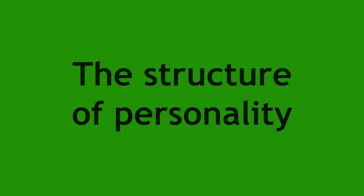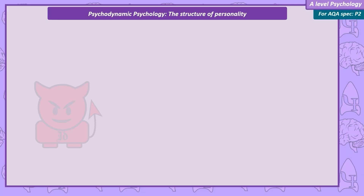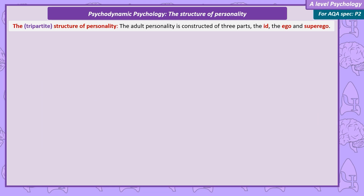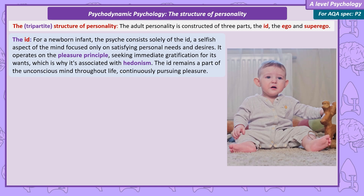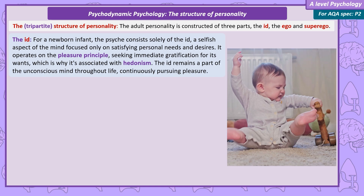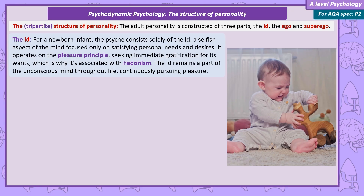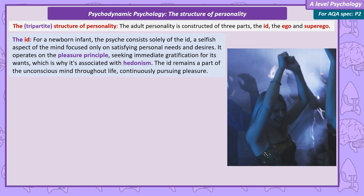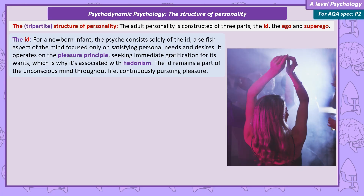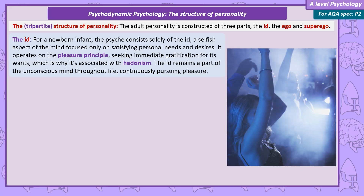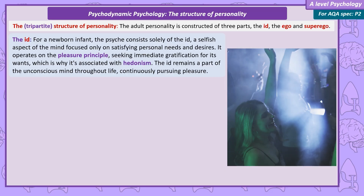The structure of personality. According to psychodynamics, the adult personality is tripartite, meaning it's constructed of three parts: the id, the ego and the superego. But for an infant, from birth to around 18 months, there's only an id. The id is a selfish part of the mind demanding that its own needs and desires are satisfied. For this reason, the id is also known as the pleasure principle, and will always be part of the unconscious mind, always looking for pleasure. This is also known as hedonism.